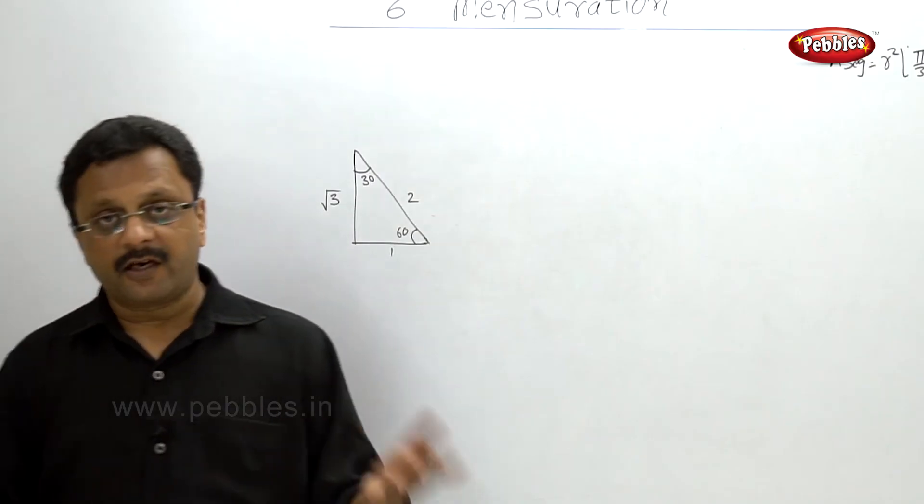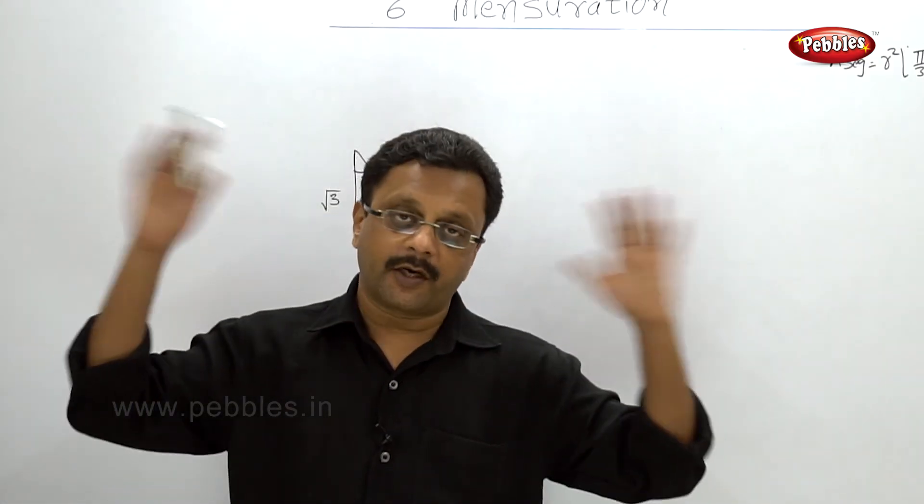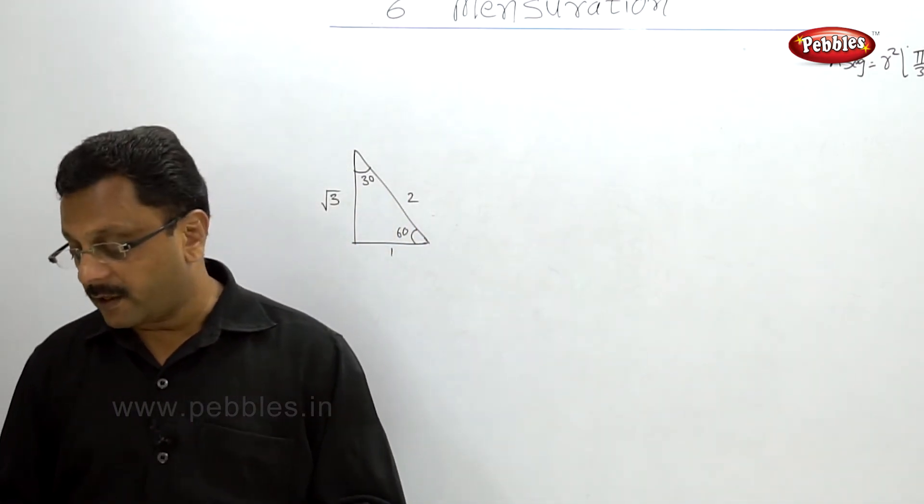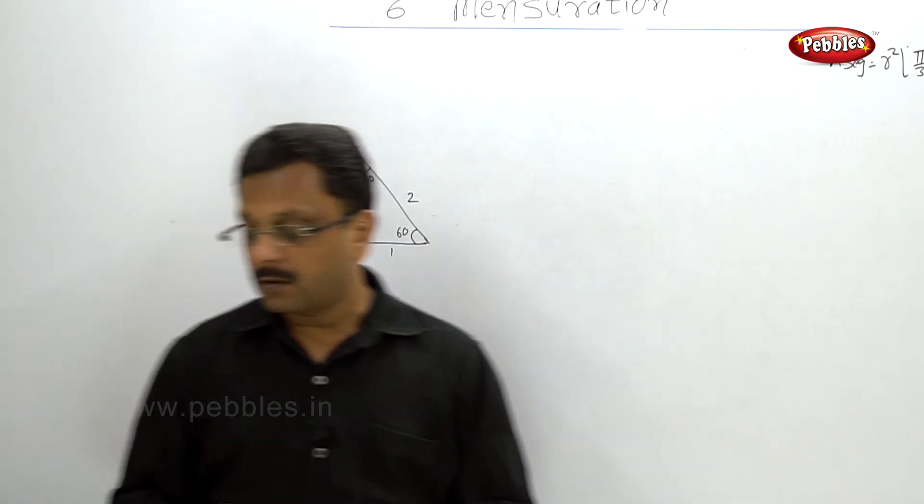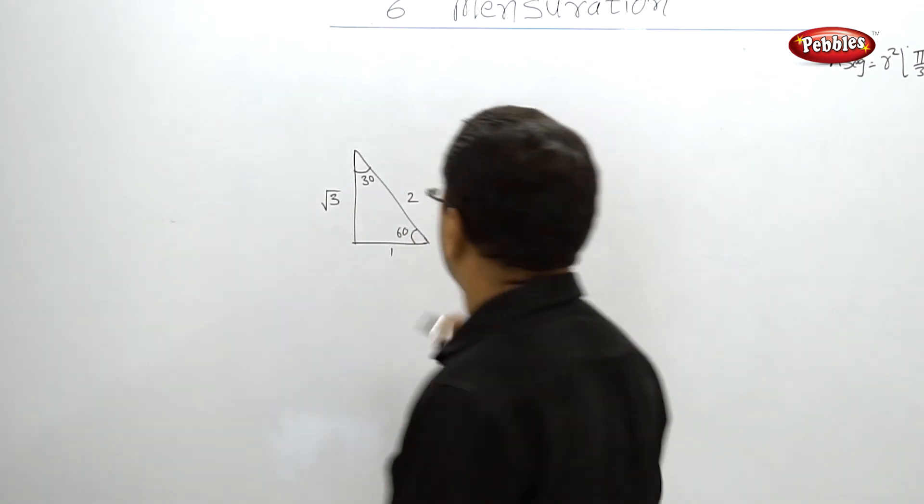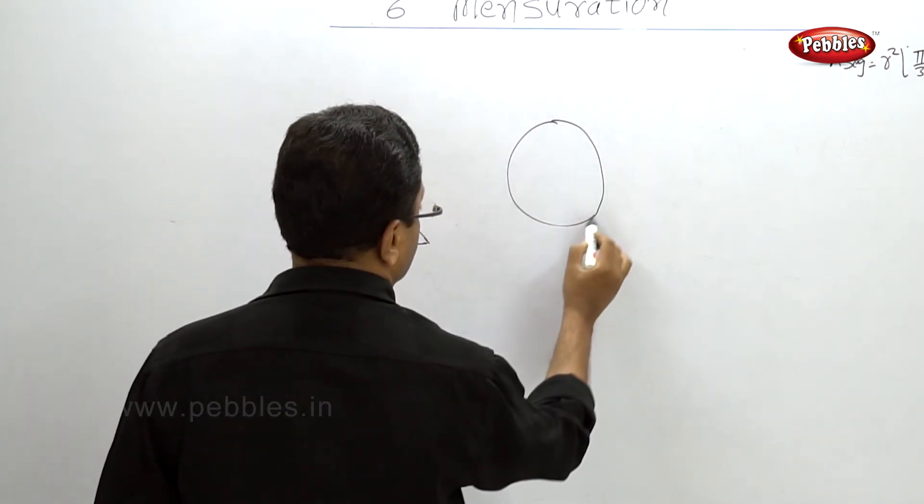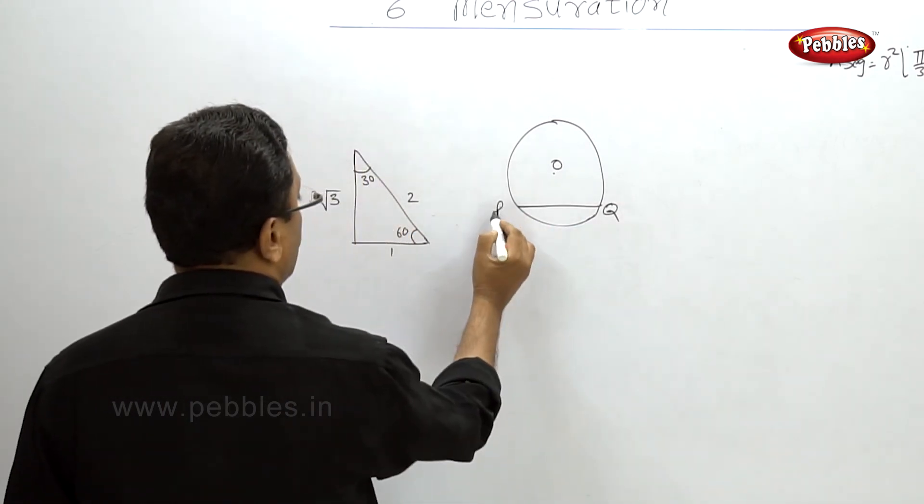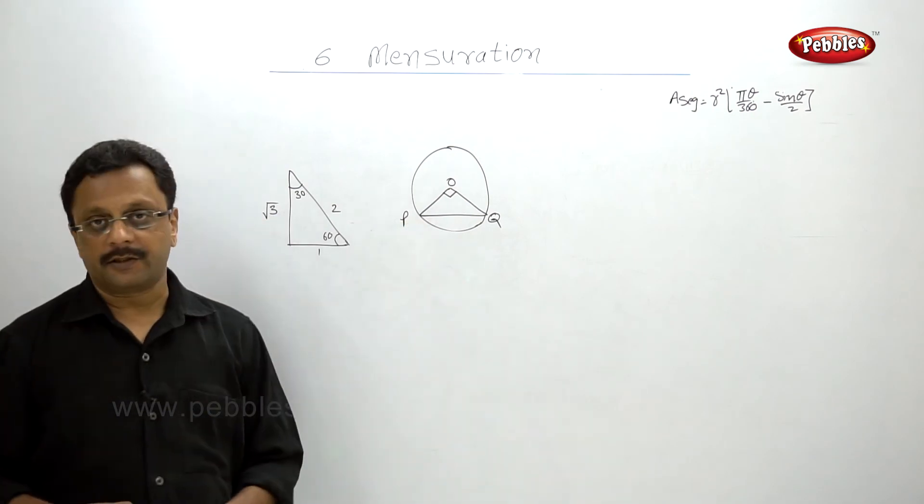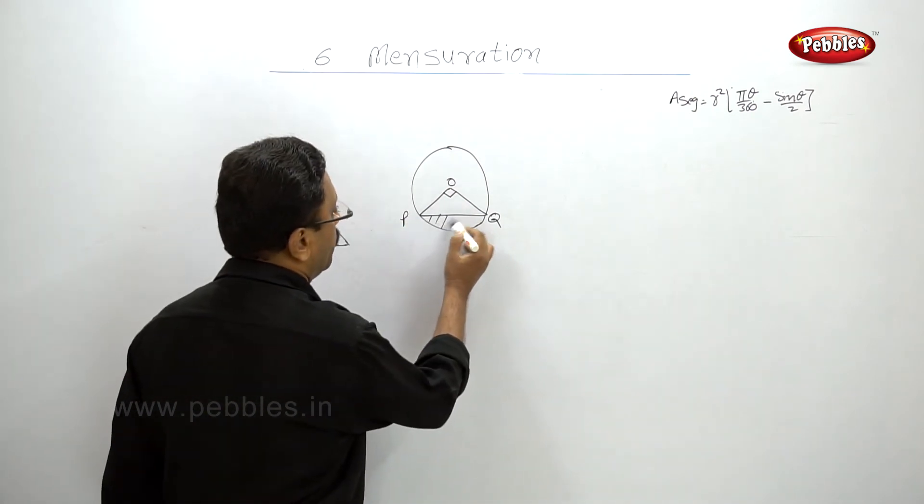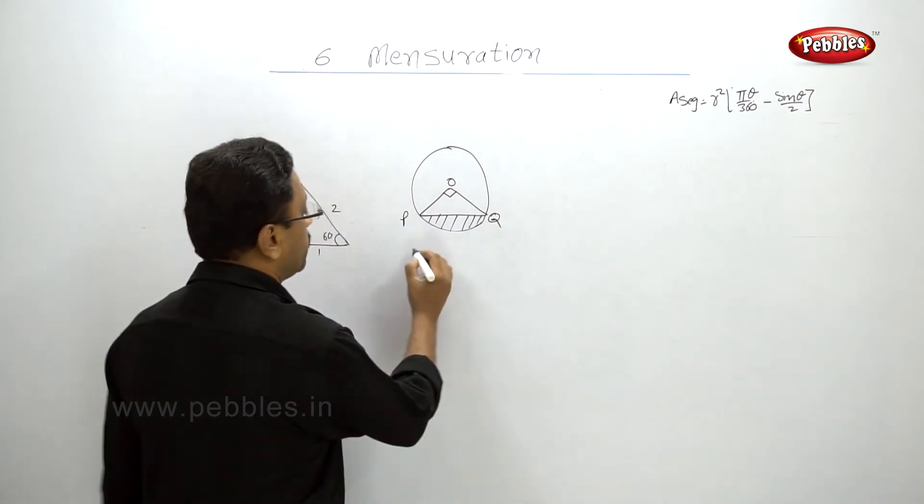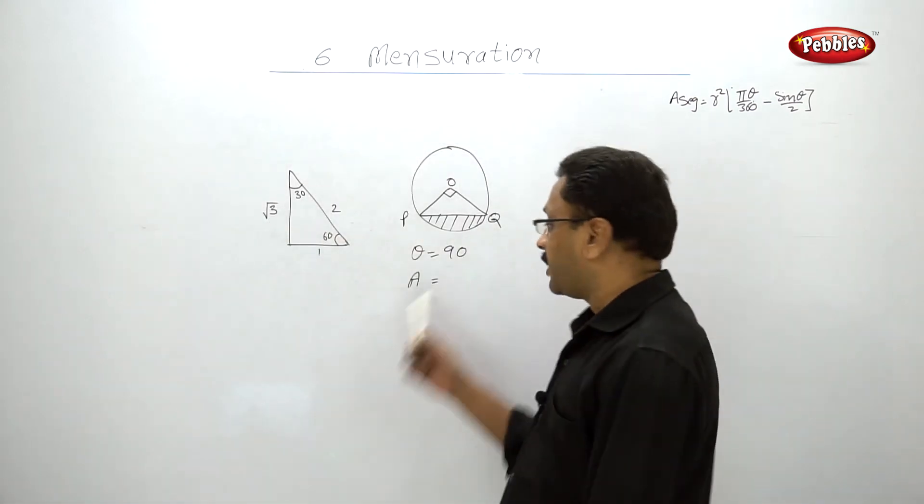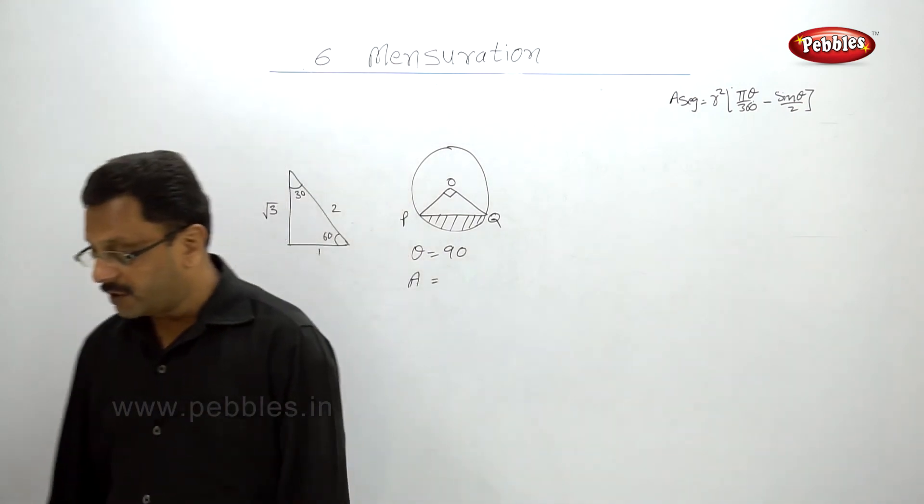One more problem we will see. In the figure - now again, figure is given in the book but we will forget the figure. Just try to draw the figure yourself. O is the center and PQ is the chord of the circle. Angle POQ is 90 degrees. They are given the area of segment. Theta is 90. Area of shared region, that means the area of segment is given, that is 114 square meters.